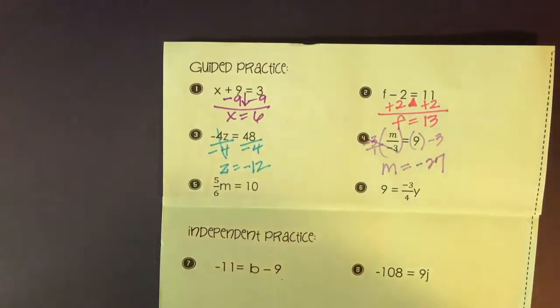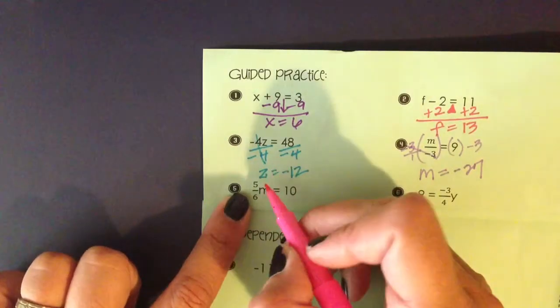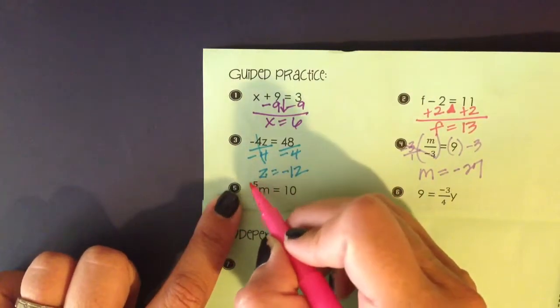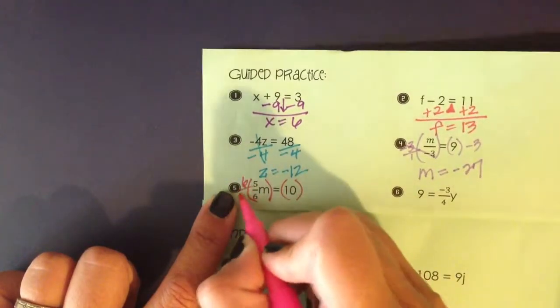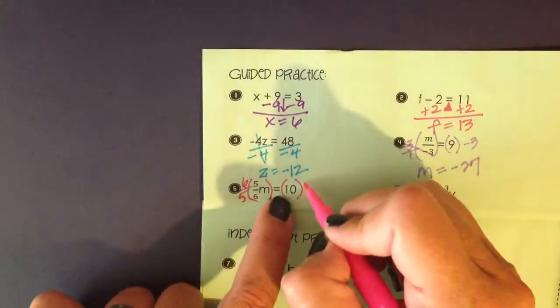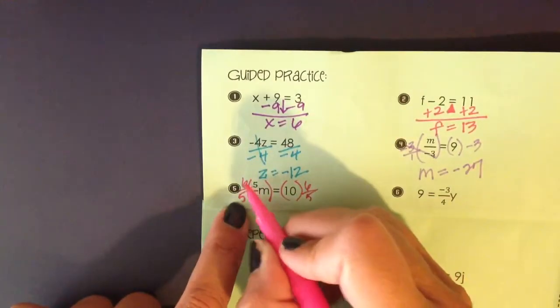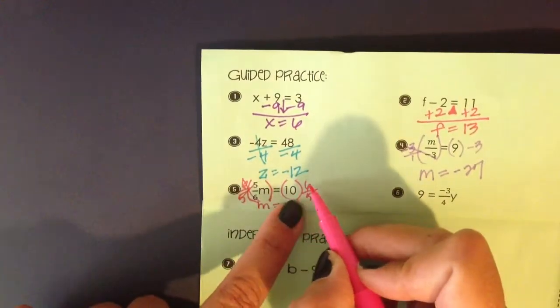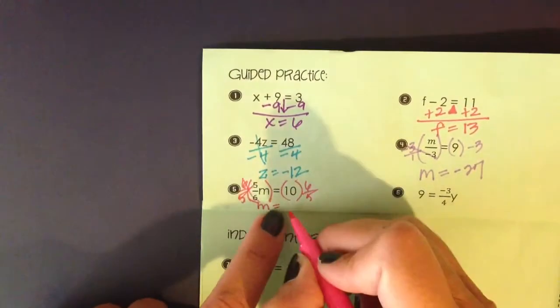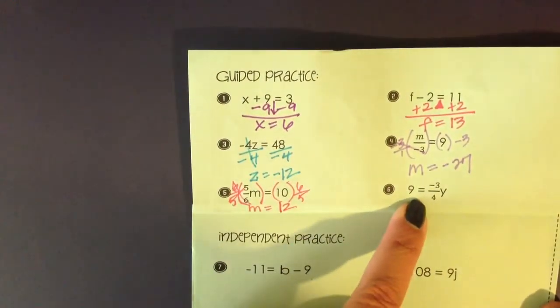In number 5, this is a nice example to have in our foldable notes because I want to remind you that when we're multiplying by a fraction, we can undo that by multiplying both sides by the fraction's reciprocal. The reciprocal is when I flip the fraction. We're going to use 6 fifths. So our 6 and our 5 cancel out. m is going to equal 10 times 6 is 60, and 60 divided by 5 is 12.